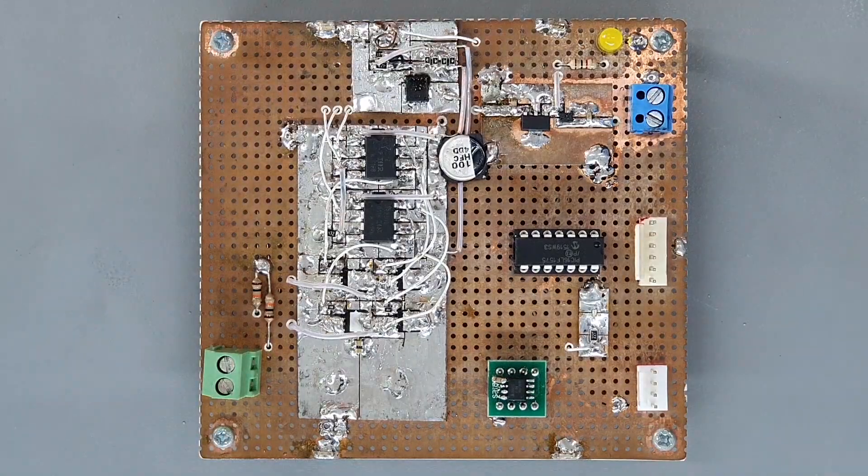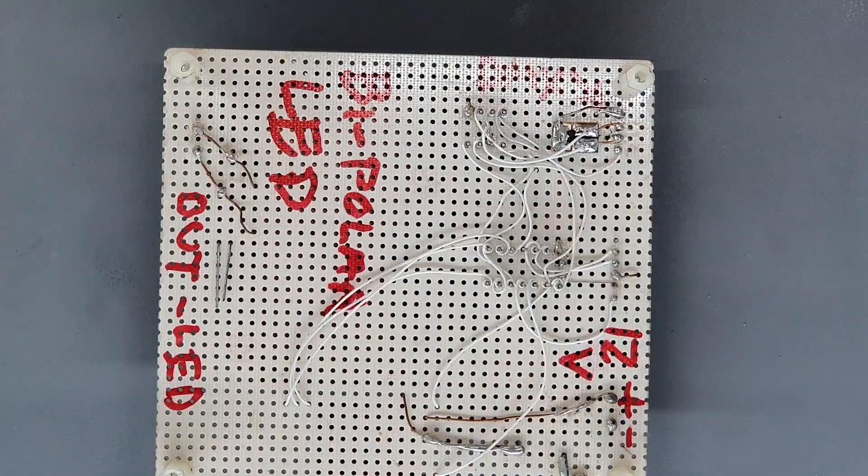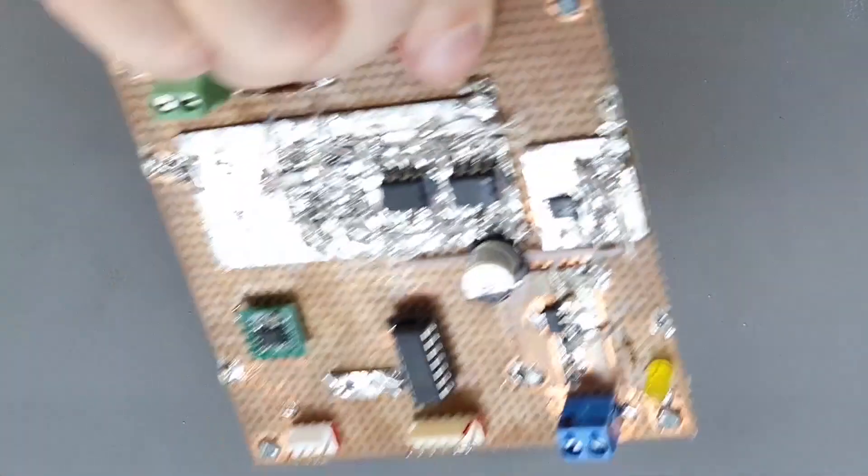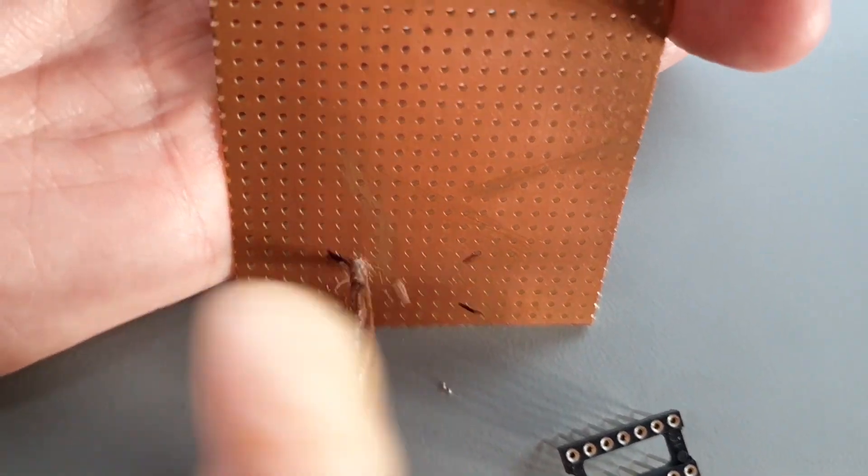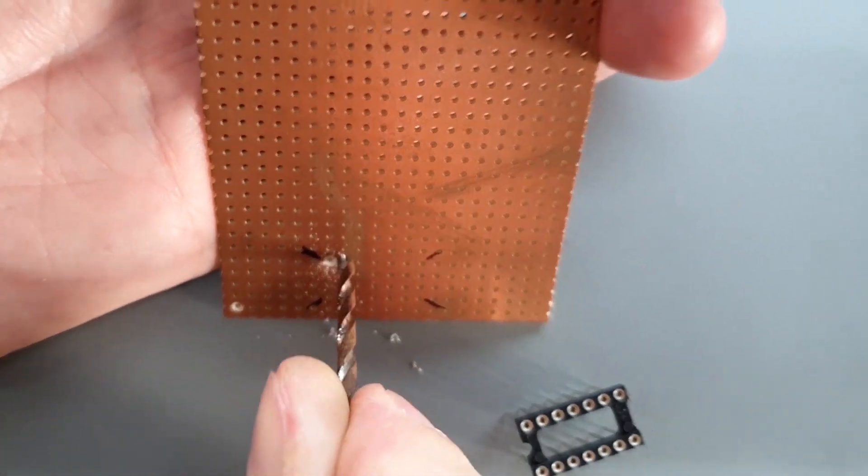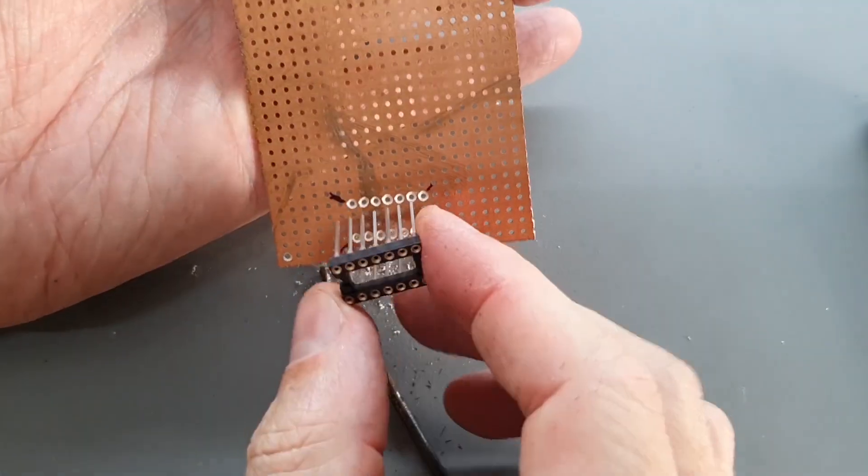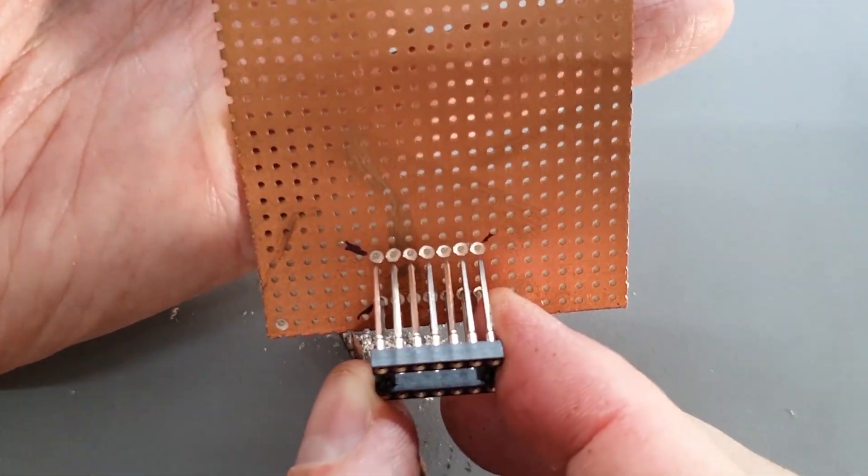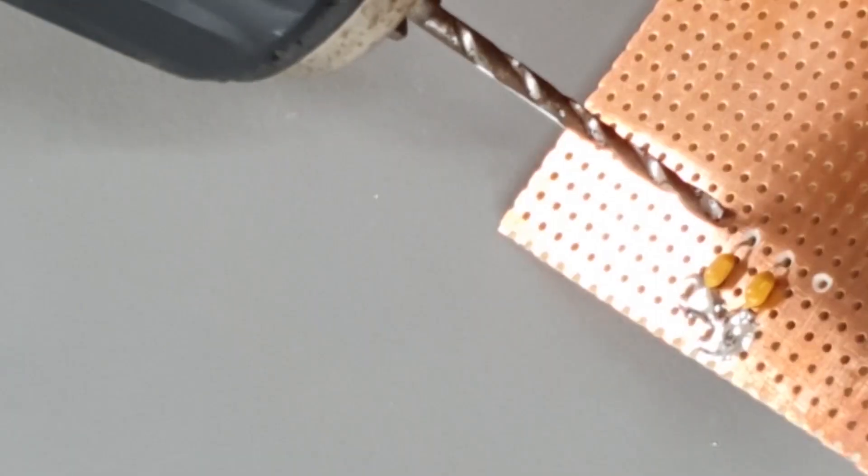This may seem counterintuitive, but I like to build my boards with a ground plane on the top. This makes wiring on the bottom easier as there is less chance for things to short. To make this work, you must relieve the copper around any hole that passes a component lead or wire. This is mandatory, but really easy. Just take a small drill and manually cut a small ring of copper away from the holes with your finger. Don't be tempted to use a power drill here. Bad idea.